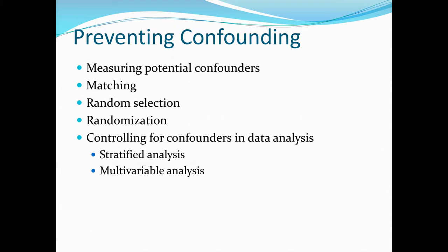To prevent confounding, we can measure the potential confounders or use the matching method. We can also use random selection. Additionally, we can control for confounders in data analysis using stratified analysis as discussed, or we can use multivariable analysis — the concept of regression, such as logistic regression. We will discuss this in more detail in future chapters, as there is a special chapter dedicated to confounding and effect modification.